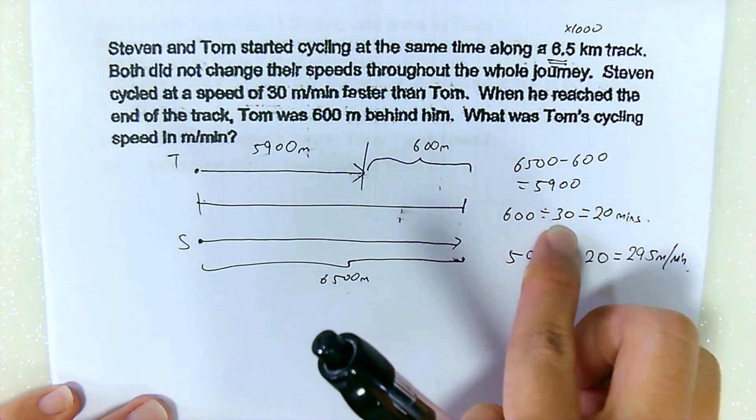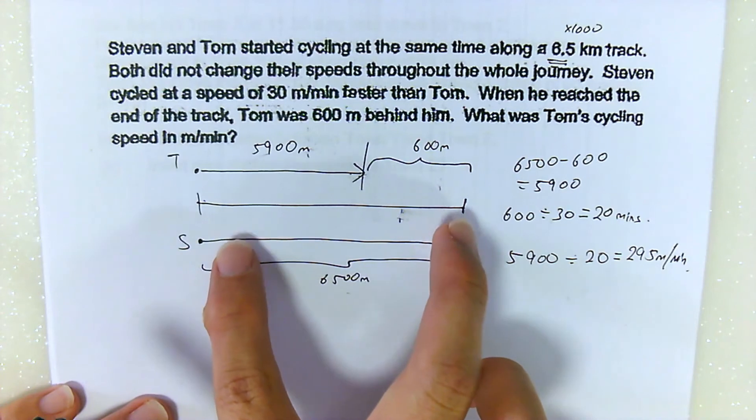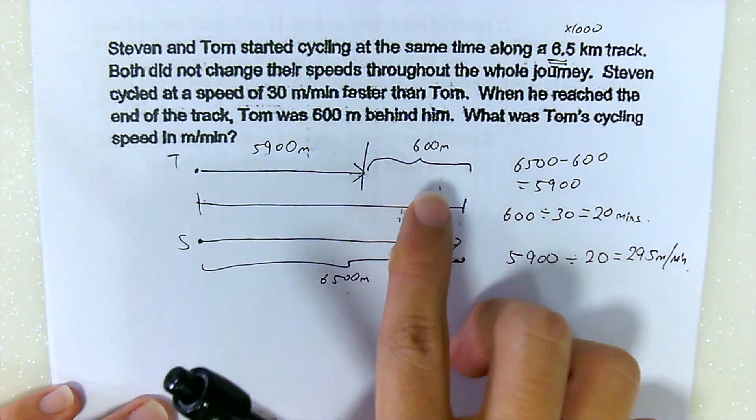So Steven took 20 minutes to travel 600 meters more than Tom. Simultaneously, it's the same for Tom. Tom also took 20 minutes to travel 5,900 meters.